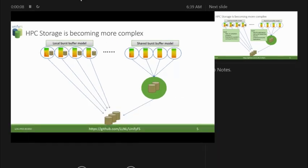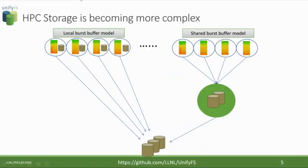System designers have introduced new layers of storage into high-performance computing systems, typically called burst buffers in recent years. There are two different models seen in the wild today. The first is the local burst buffer model, where storage devices are local to a compute node and not shared — seen on machines like Summit at Oak Ridge or Sierra at Livermore. Then there's the shared burst buffer model, where larger storage devices are shared by a group of compute nodes, allocated dynamically or statically by the resource manager — seen on machines like Cori at NERSC or Trinity at Los Alamos.